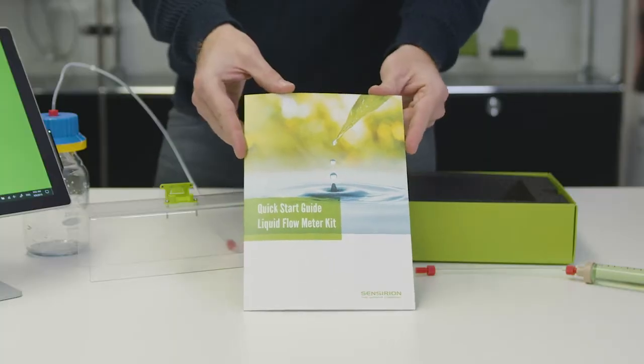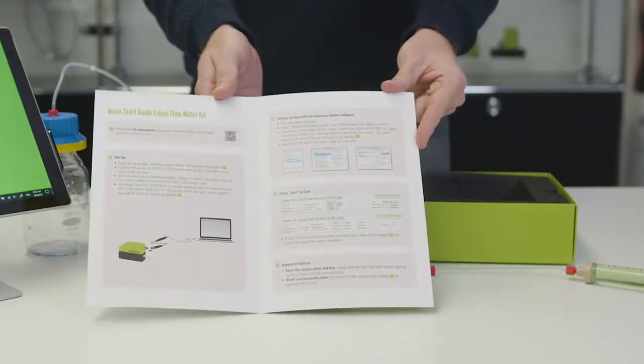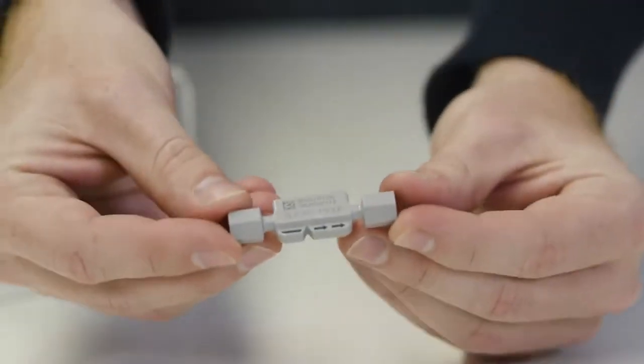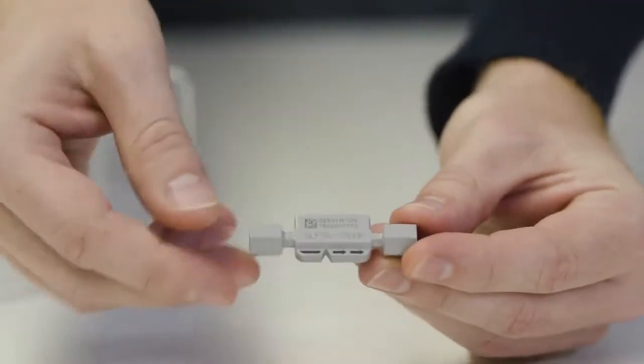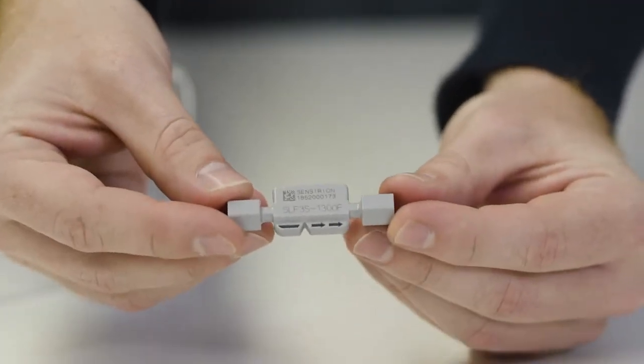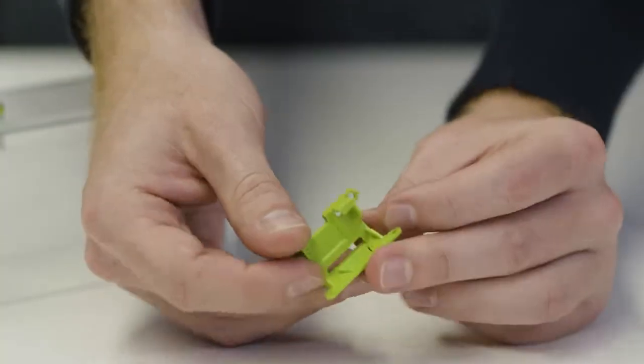The flow kit includes a quick start guide leaflet with step-by-step instructions, the SLF-3X sensor with an arrow indicating the flow direction, and one SLF-3X mounting clamp.